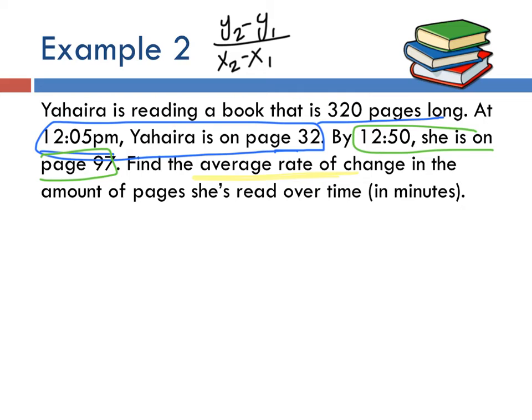We know that at twelve oh five, I'm actually just going to write that as five because it's the same hour. So I'm just going to say five comma thirty two. If you're confused about why I chose five, hopefully this clears up, if not ask me in person. Next point we have is twelve fifty, so I'm just going to write fifty comma ninety seven.